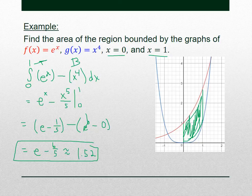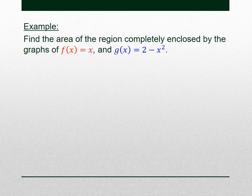Let's do another example: find the area of the region completely enclosed by f(x) and g(x). This is different from the others — it doesn't give us x = 0 and x = 1. We're going to have to figure out what x values are our bounds for the definite integral, and the way we're going to do that is by seeing where these functions are equal.